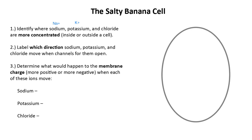Does anyone happen to remember the word for chloride? Chloride has a negative charge — those are called anions. These are the three types of ions we care about when thinking about neuron signaling: sodium, Na+; potassium, K+; and chloride, Cl-.